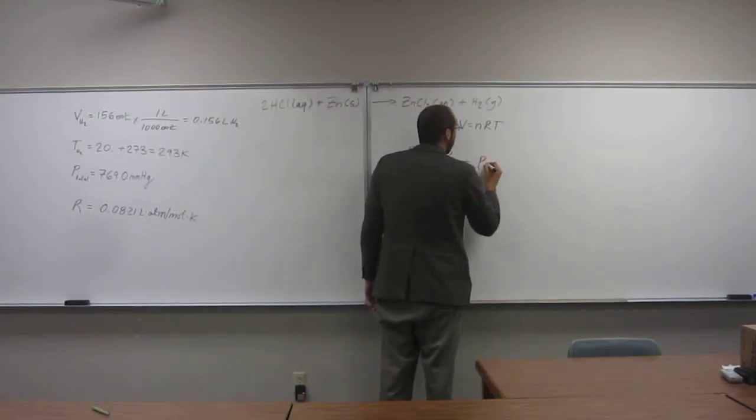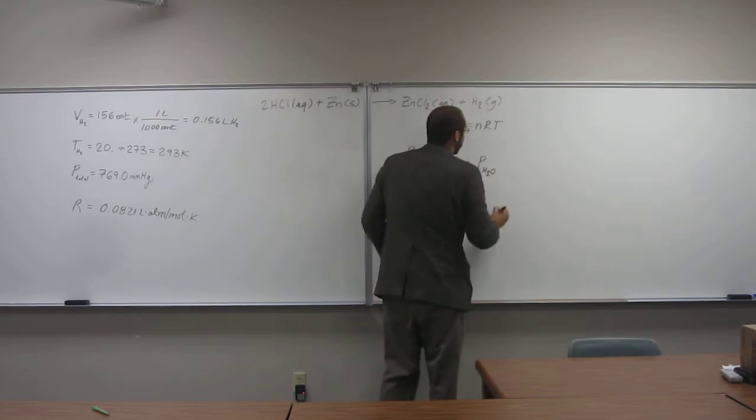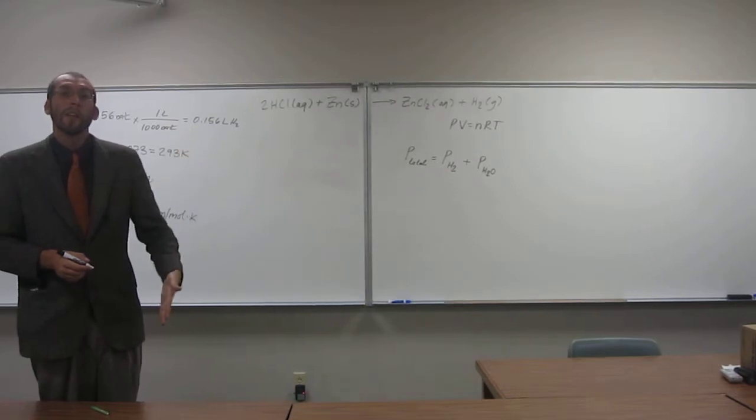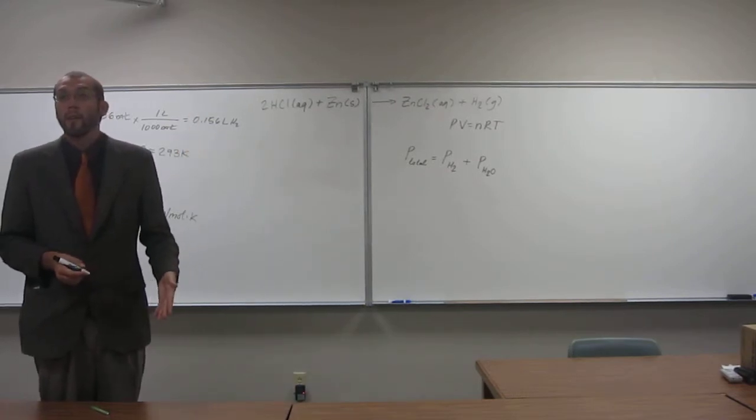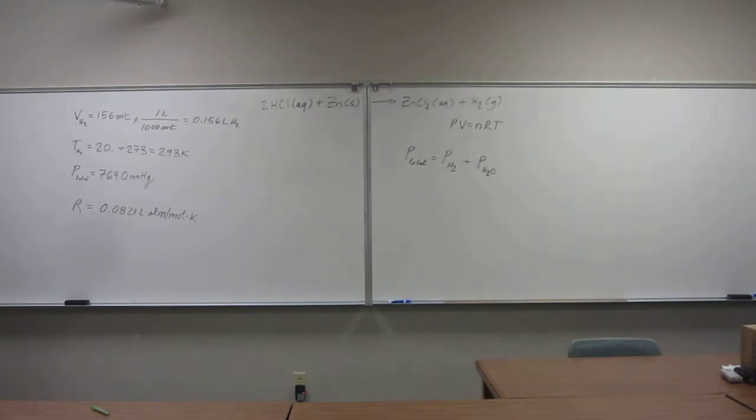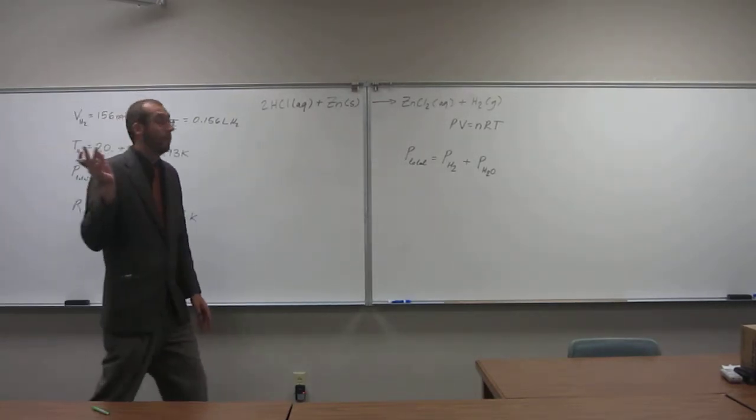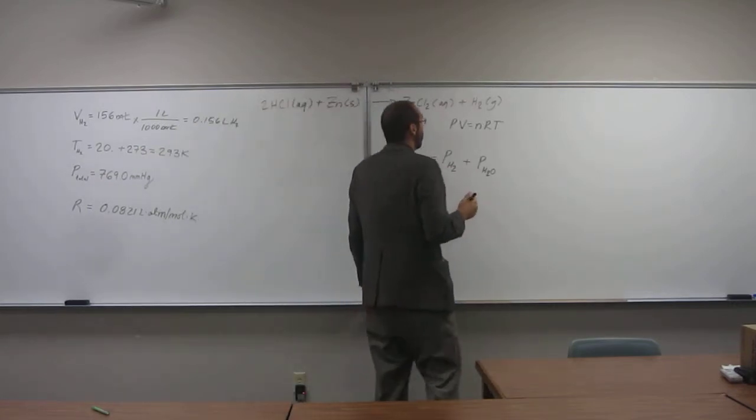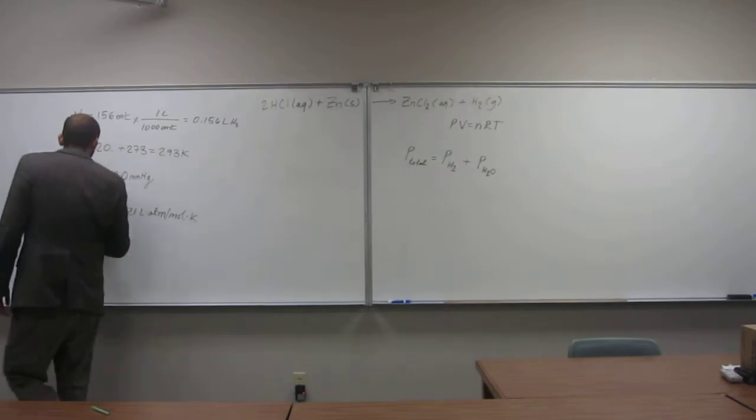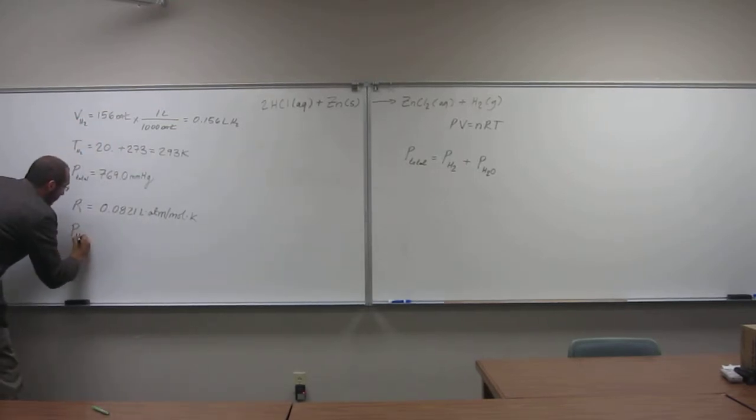Was the pressure of water given to us in this problem? No. We have to... Remember, there's that table that I want you to look at. Everybody look at the table. Tell me what the pressure of water is. 17.5 millimeters of mercury. That's where you get that pressure from. That has to be given to you, that table.